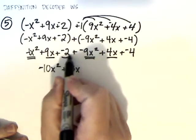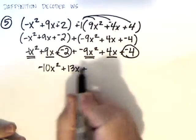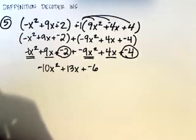Now, I'm going to combine my constants here and here. I have a negative 2 and a negative 4. Negative 2 plus negative 4 gives me negative 6.